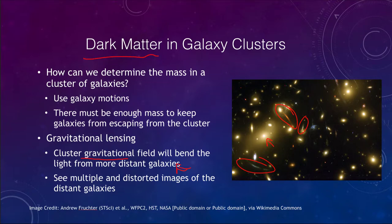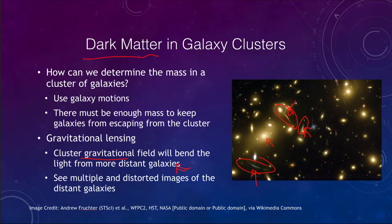The dark matter, while it does not contribute to the light of the galaxy cluster at all, does contribute to its mass and will cause the bending to be more significant. We can use Einstein's model of gravity to figure out how much mass there must be to explain the distortions that we see. And when we do that, we find out that there is many times the amount of matter that must be present that we simply cannot see.